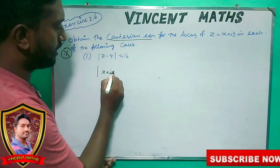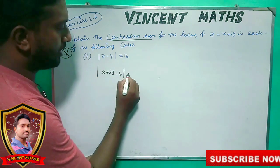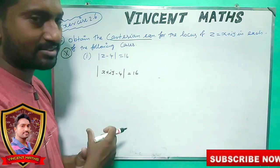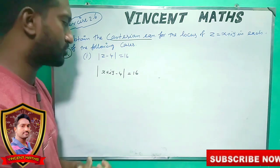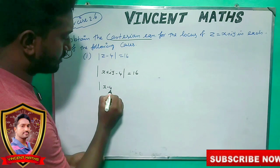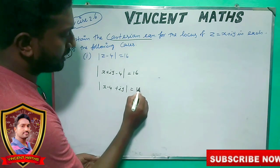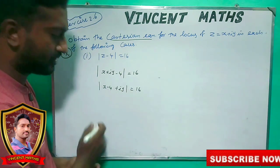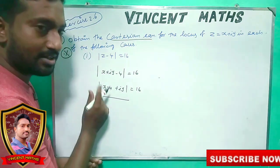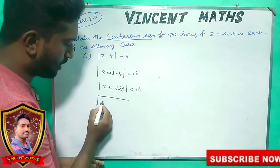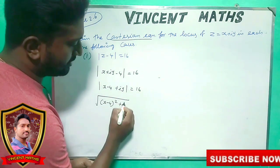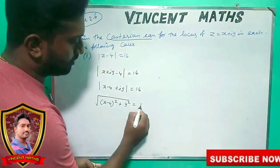x plus y minus 4 equal to 16. Now what we do is to cancel the real number and imaginary number. X minus 4 plus i·y equals 16. We cancel the square root of the imaginary number squared, then called the real number, since real number squared: x minus 4 squared plus imaginary number y squared equal to 16.